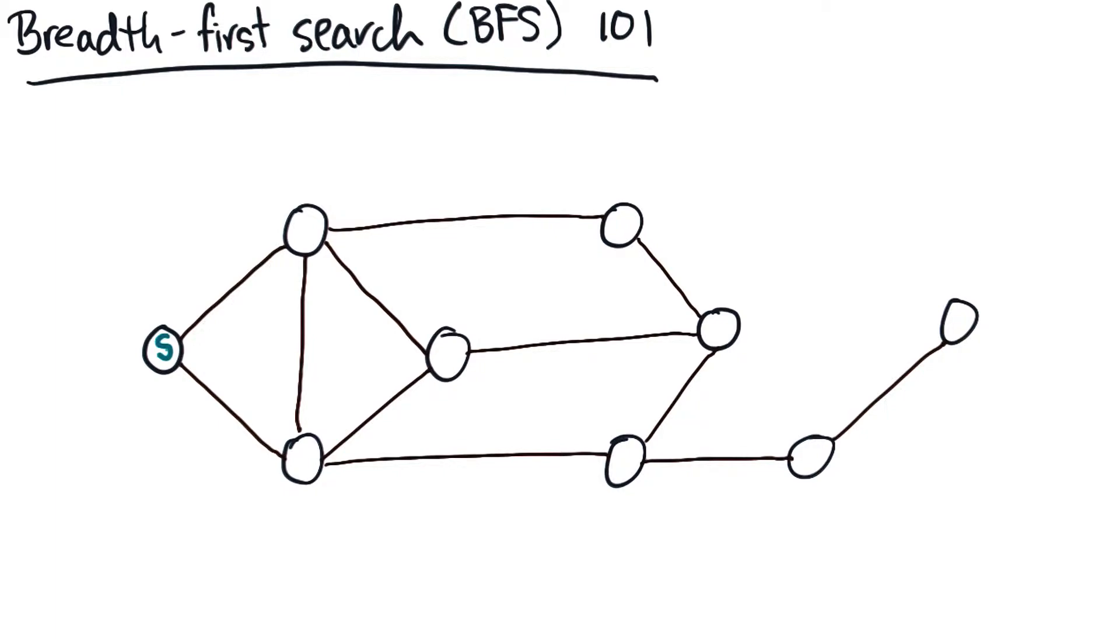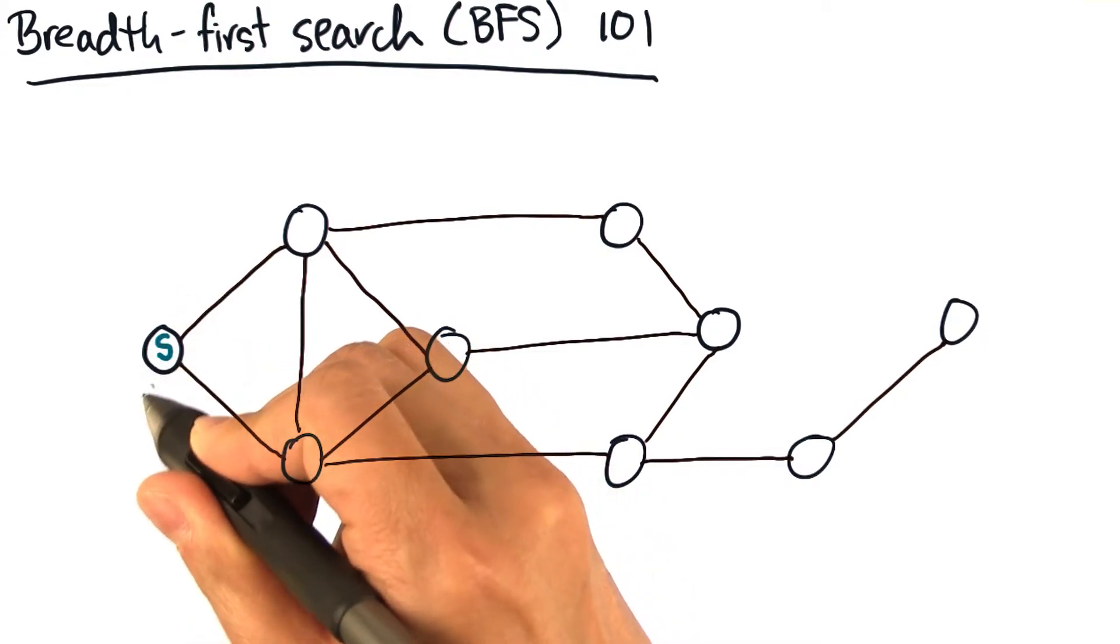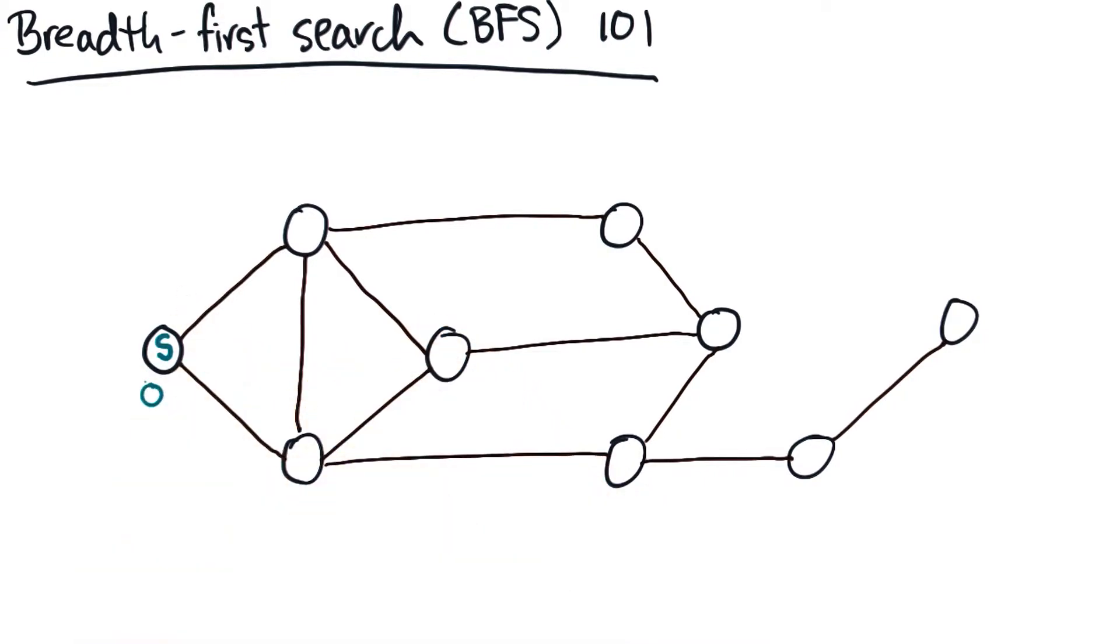For each vertex, we'll keep a shortest distance. Now, the source is a distance of 0 edges away from itself, so let's set its distance to 0. Now, for all the rest, you don't know any of the distances yet, so let's set them all to infinity.